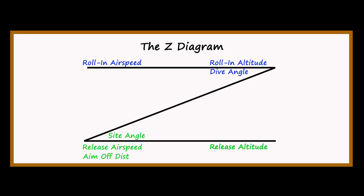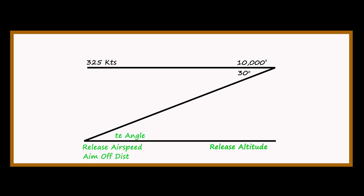Let's populate the A4E 30-degree dive angle Z-diagram we've been using. Starting at the top left, we roll in at 325 knots from 10,000 feet at 30 degrees. We use a sight depression of 80 mils. At the release point we're going 450 knots, our aim-off point is 1,320 feet from the target, and we drop at 3,000 feet. Let's go to the range and see what that looks like in practice.